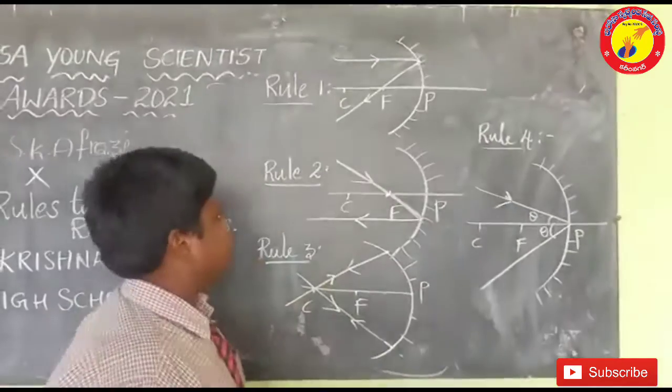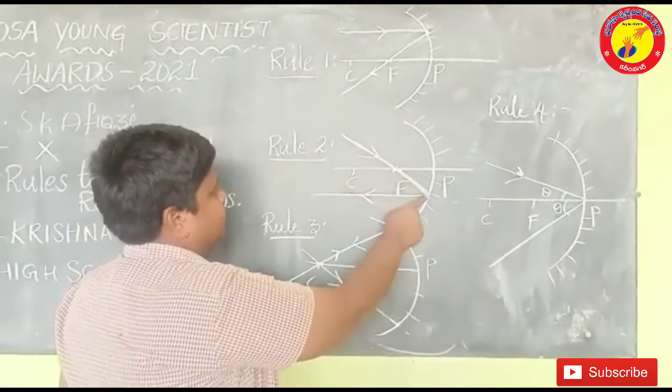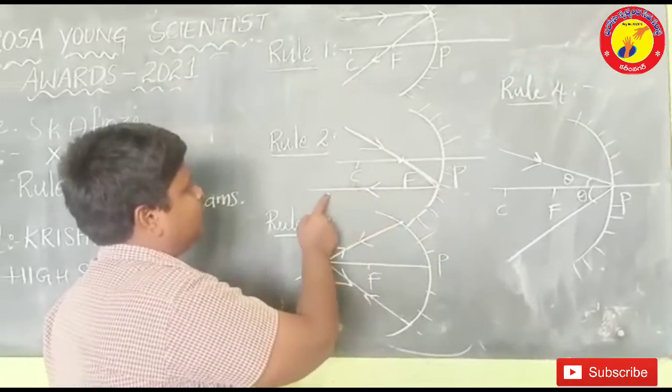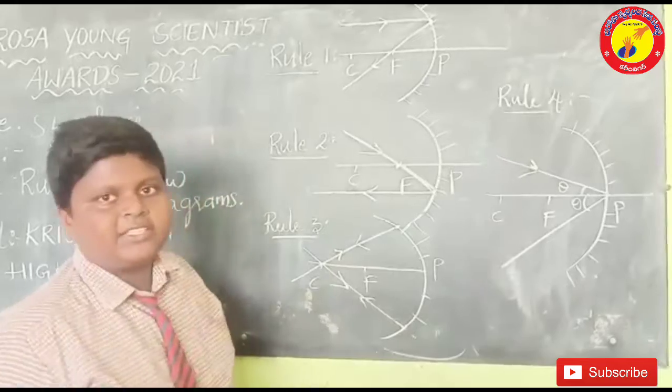And rule number 2: The incident ray which is moving through focus will reflect back parallel to principal axis.